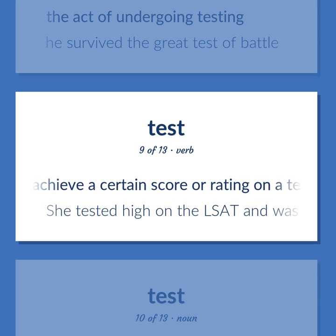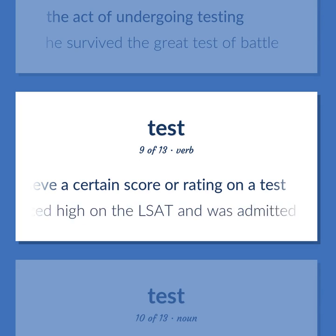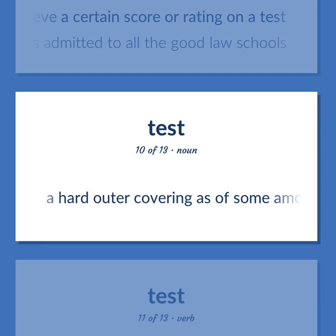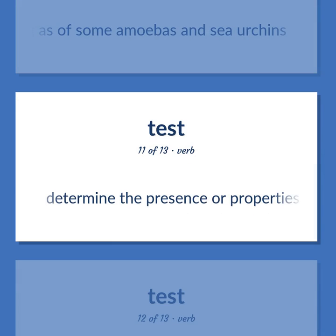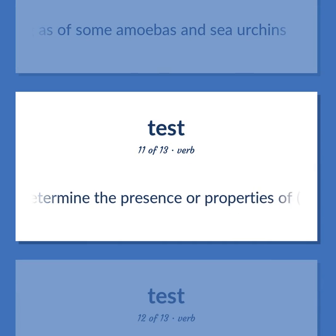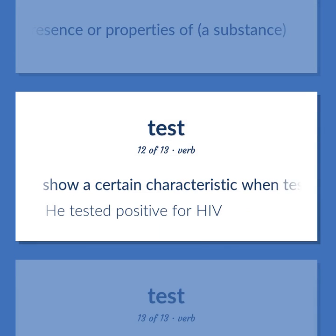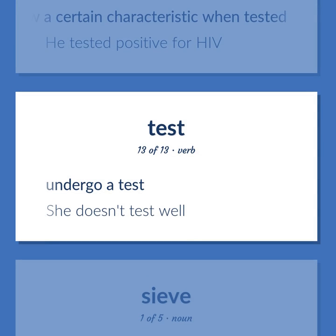Achieve a certain score or rating on a test. She tested high on the LSAT and was admitted to all the good law schools. A hard outer covering as of some amoebas and sea urchins. Determine the presence or properties of a substance. Show a certain characteristic when tested. He tested positive for HIV. Undergo a test. She doesn't test well.